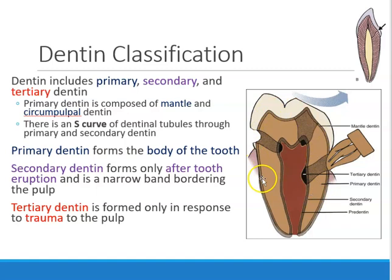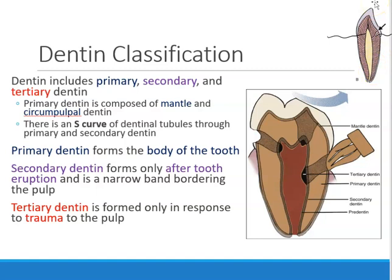Primary dentin forms the body of the tooth — the bulk of the tooth is all primary dentin. Secondary dentin is just around the pulp, a really small narrow band. Secondary dentin is only formed once the tooth is fully erupted, and it forms at a much slower pace than primary dentin.